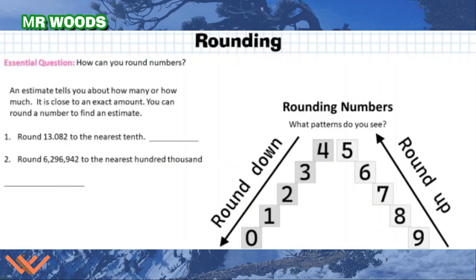Our first thing that we're going to be looking at is rounding. The essential question is how can you round numbers? Well, first let's take a look at this chart here. It says here rounding numbers. What patterns do you see? Round down and round up. Well, this is where it's going to be essential. So estimate tells you about how many or how much. It is close to an exact amount. You can round a number to find an estimate. If I'm trying to get a round number to feed approximately 4,558 people, then I could just say, well, it's like 4,600. Because there might be more, there could be a little bit less, but I'd rather be a little over than to be under. So we have this number here for number one. A little practice here.